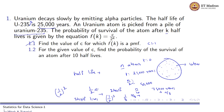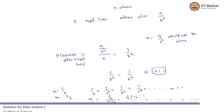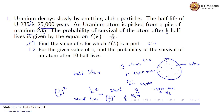For the given value of c, find the probability of survival of the atom after 10 half-lives. As we have discussed, the probability of survival after k half-lives is given by 1 / 2^k. They are asking for the probability of survival when k = 10. That would be equal to 1 / 2^10. This is the answer to the second question: 1 / 2^10.